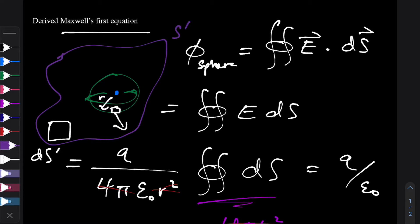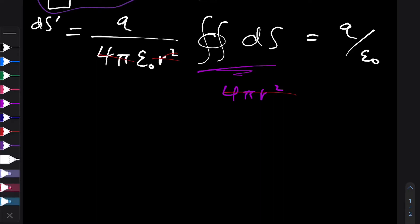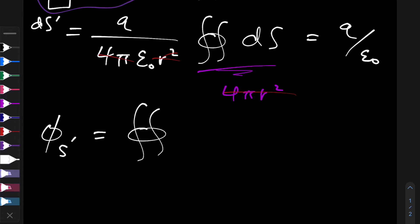Each of these ds dashes, well, firstly let's see what the flux through this surface will look like. So the flux through this surface is φ s dash, so that's again closed, it's a closed surface, so that's why we have a circle over the integral sign of E dot with ds dash.